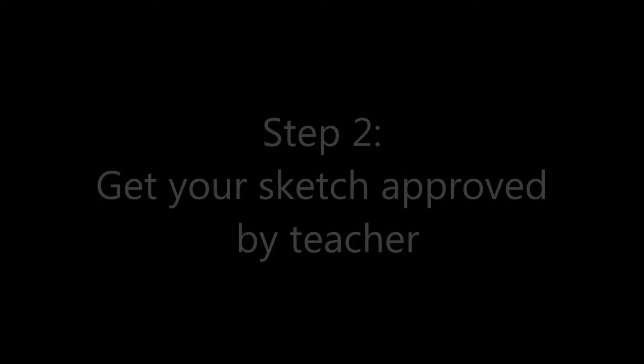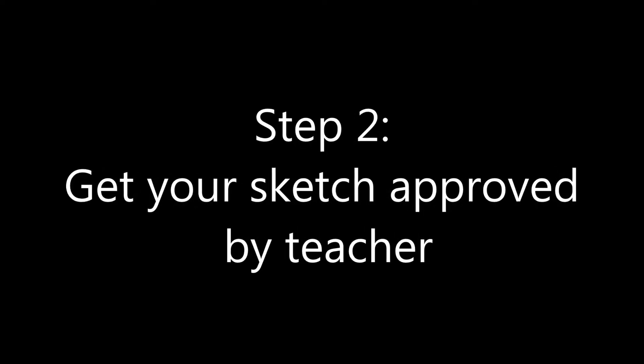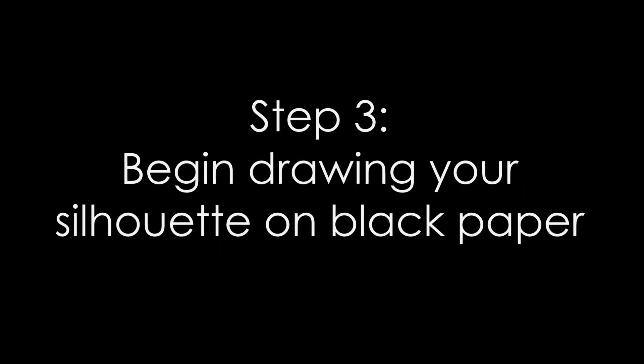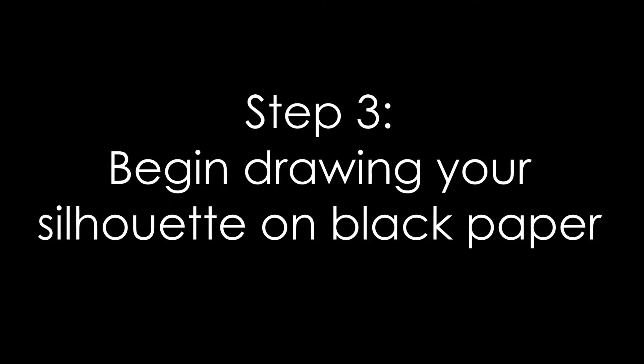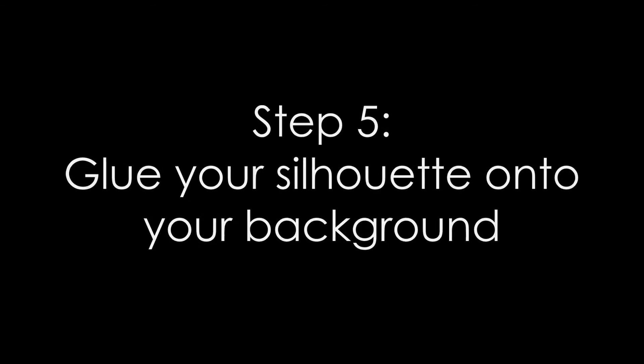Your first step is going to be to sketch out your idea. You're then going to get your sketch approved by the teacher. The third step is to begin drawing your silhouette on black paper. Step four is to start carefully cutting out your silhouette. And finally, you're going to glue your silhouette onto your background.